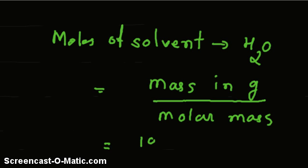per 1000 grams of water, we have 18 grams, that is the molar mass of water, which equals 55.55 moles.